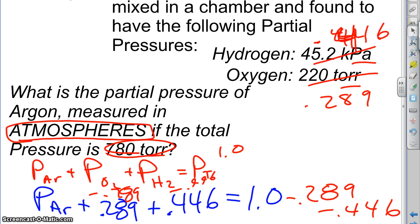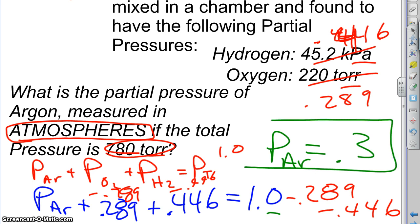And that's going to give me the answer. So the answer is going to be 1.0 minus 0.289 minus 0.446 for a total of 0.265. But we can only go one decimal place there by the rule. So the answer is that the partial pressure of argon is 0.265, but we're going to round that to one decimal place because there's only one decimal place there: 0.3 atmospheres.